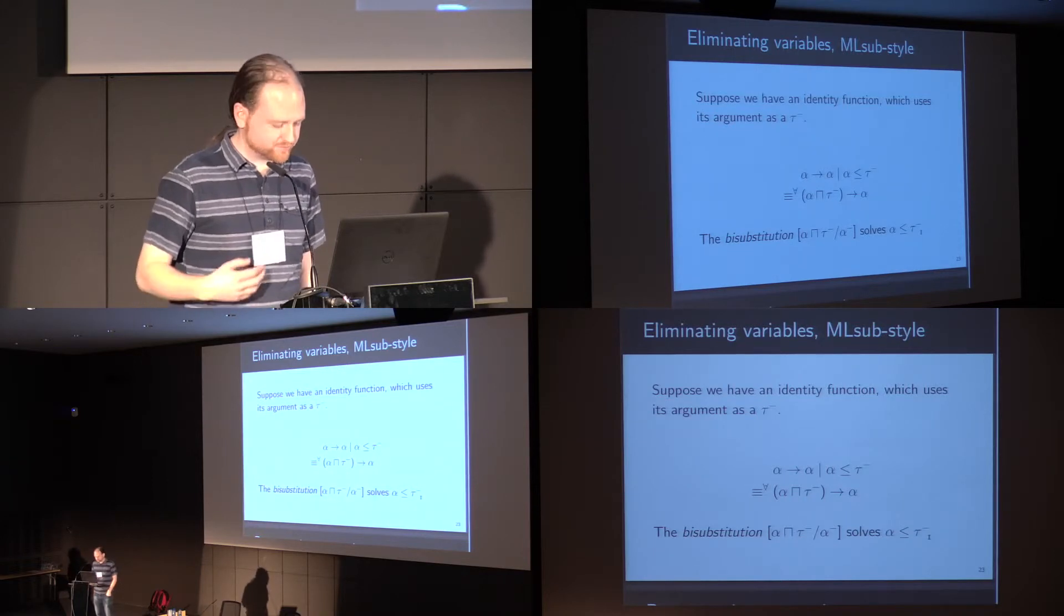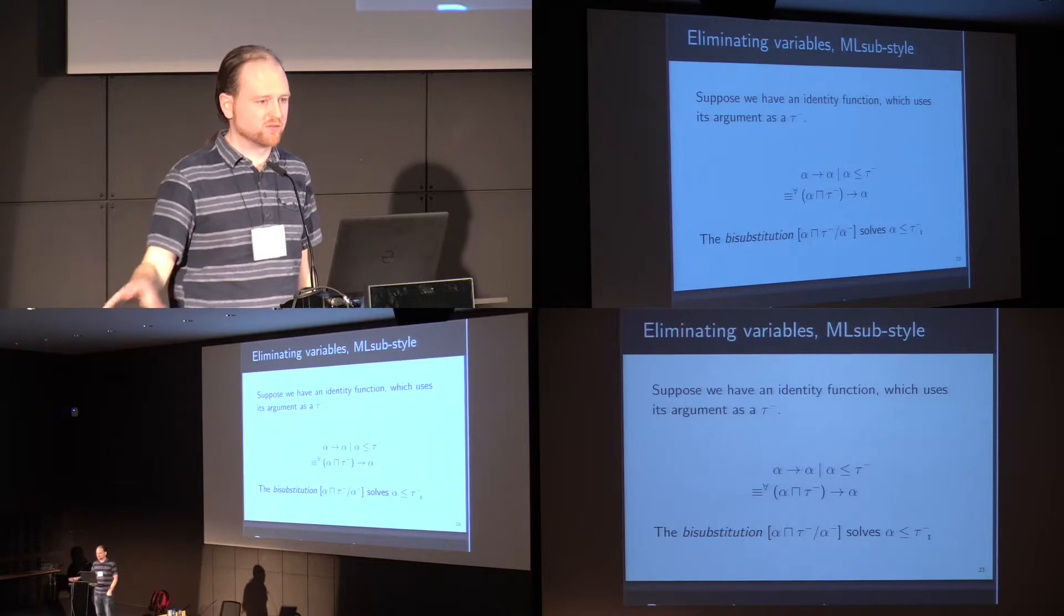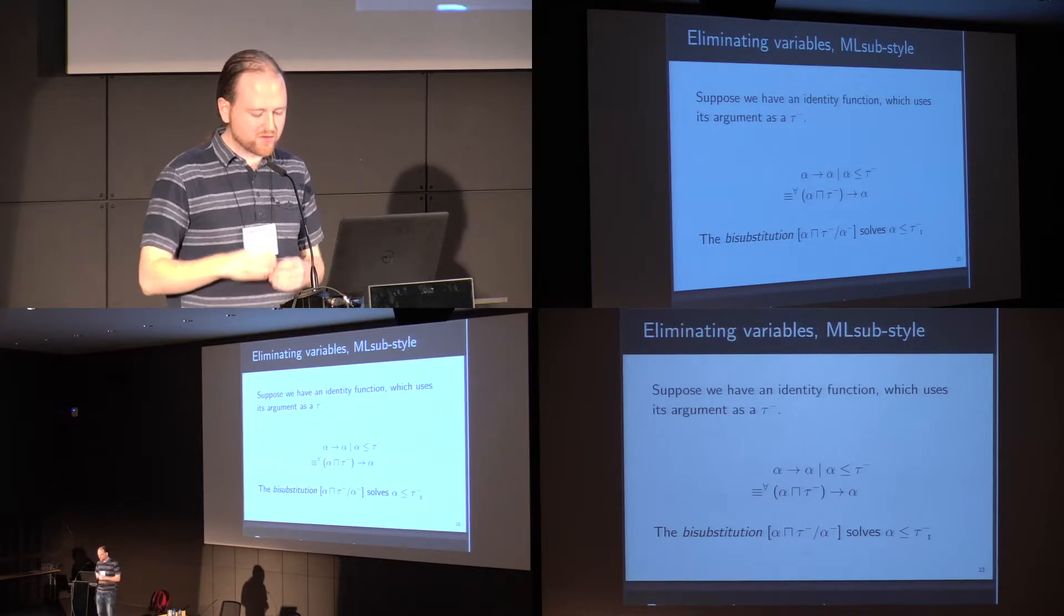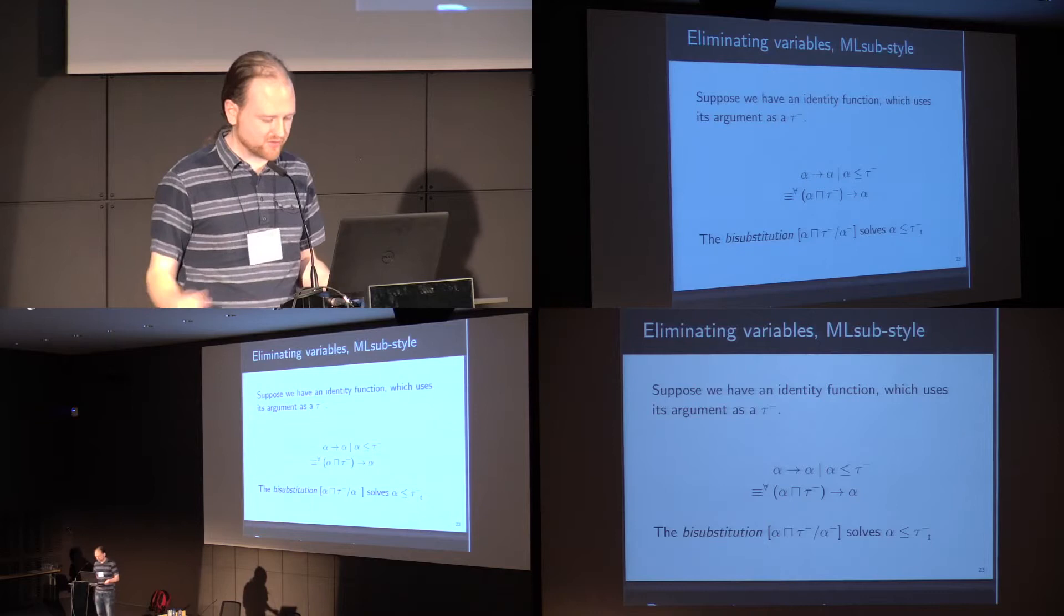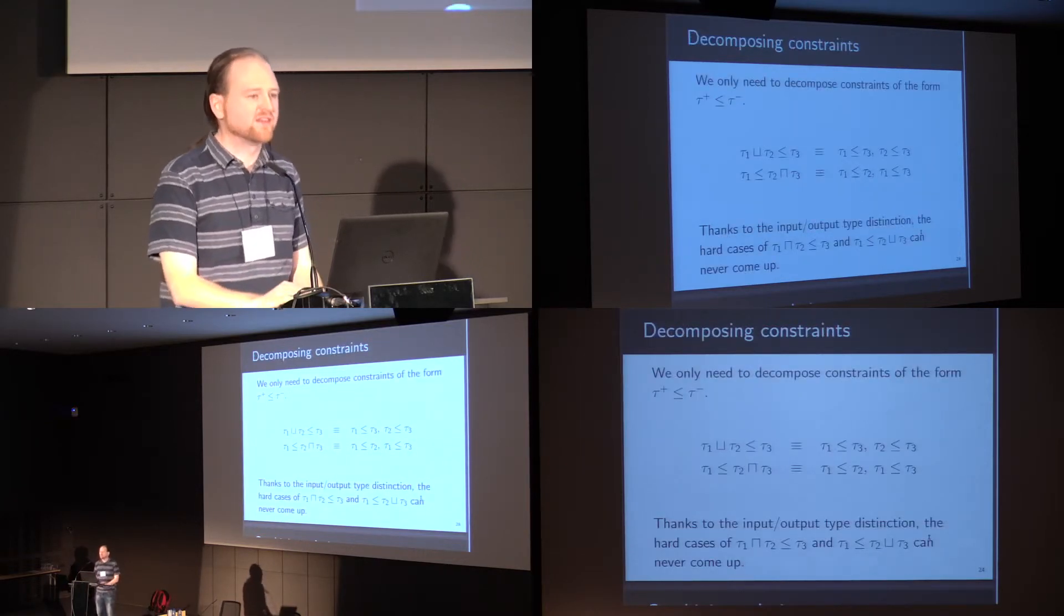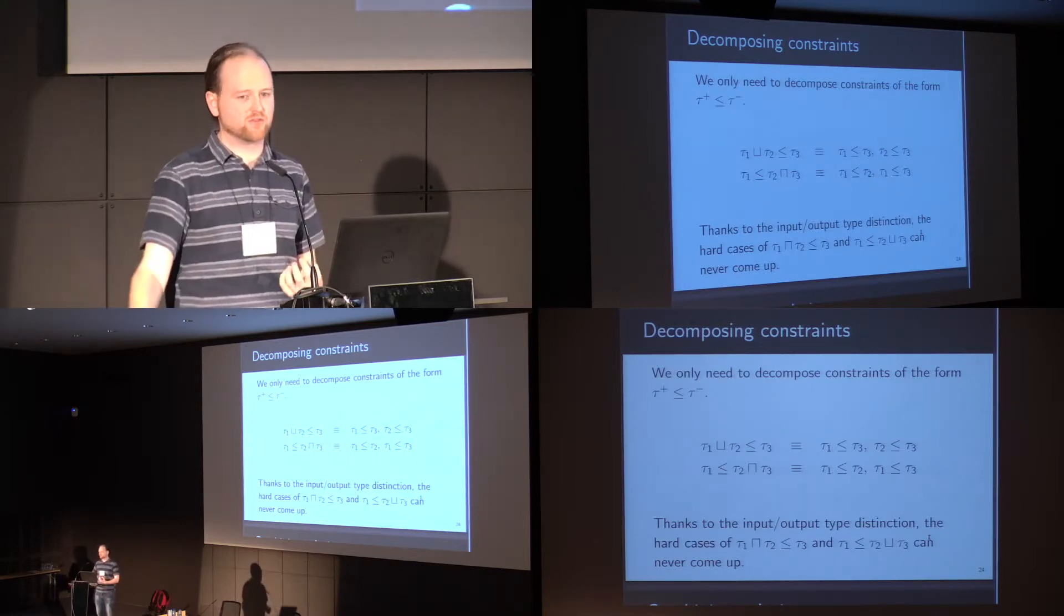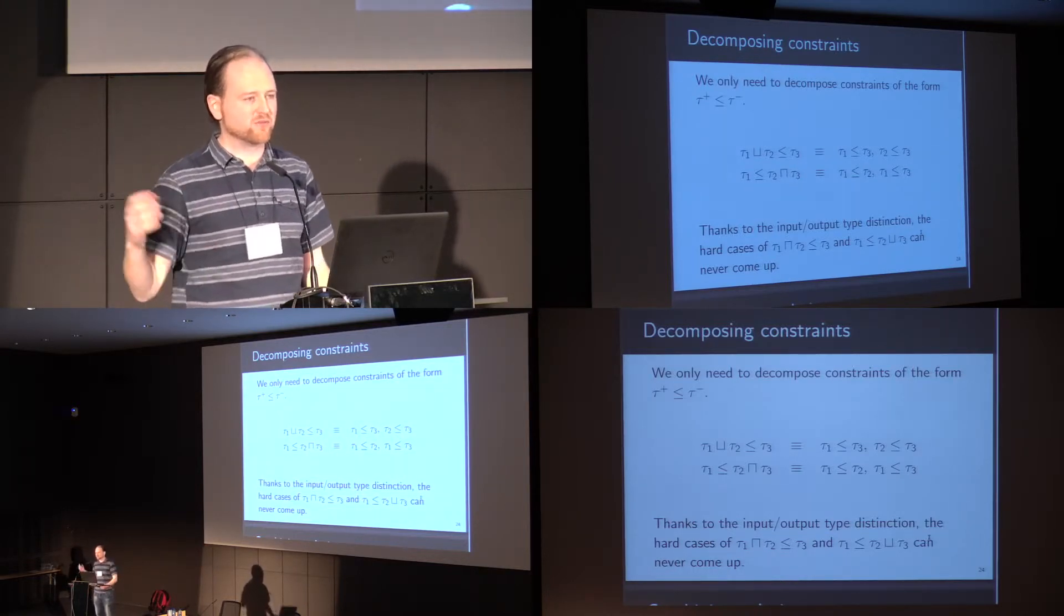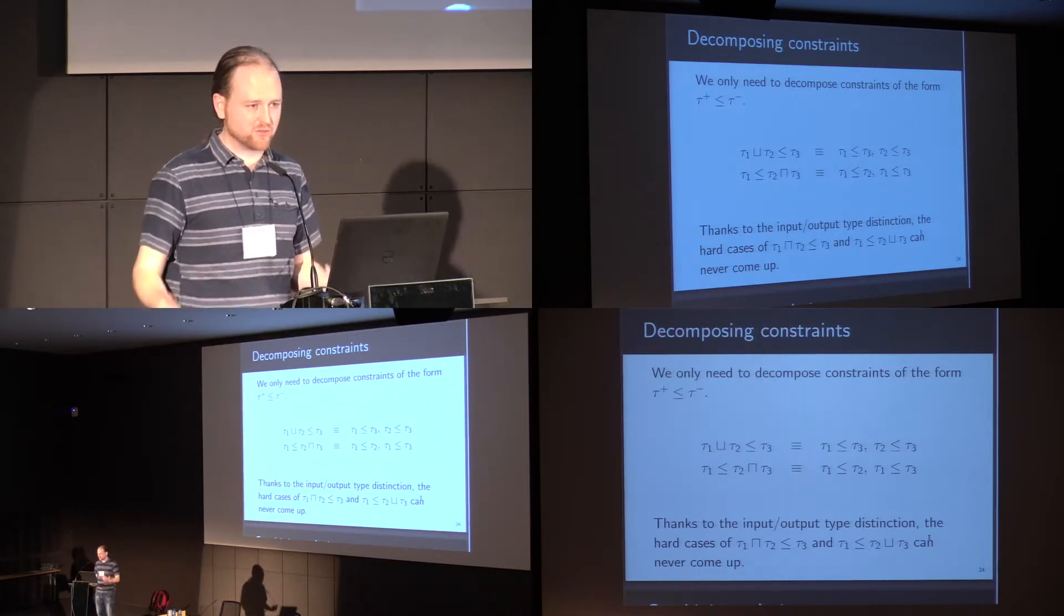So once we've got a way of solving variable constraints, when we've got a variable combined with a type, then we can decompose larger constraints into smaller constraints, much in the manner of standard unification algorithm. Conveniently, the only case where we need to do this is when we're feeding the output of some sub-expression to the input of another sub-expression, so when we're saying that a positive type t-plus is a subtype of a negative type t-minus. These are the only constraints that we need to decompose.